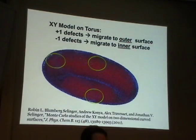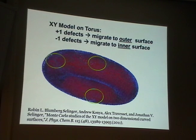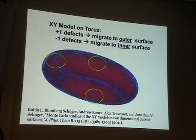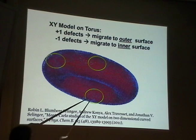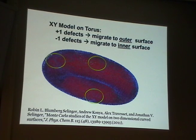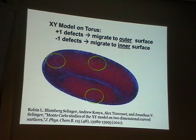Here's my hairy doughnut — a doughnut with an XY model on it. I annealed it as slowly as I could but could not get rid of all the defects. The plus-one defects migrate to the outer surface where Gaussian curvature is positive, and the minus defects migrate to the inner surface where Gaussian curvature is negative. Even though there's an attractive interaction between positive and negative defects, it's hard for them to annihilate because they get stuck in different regions.